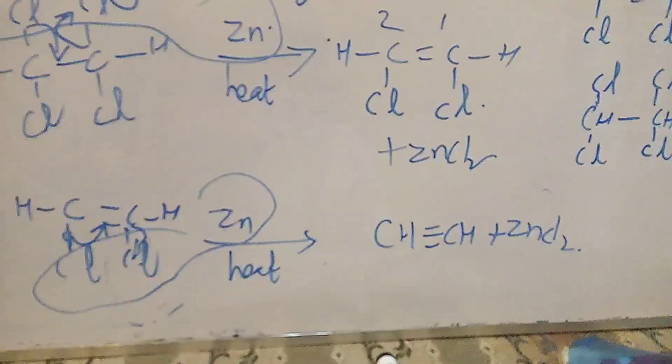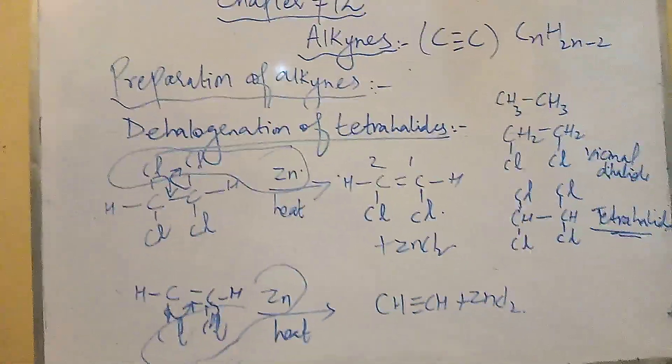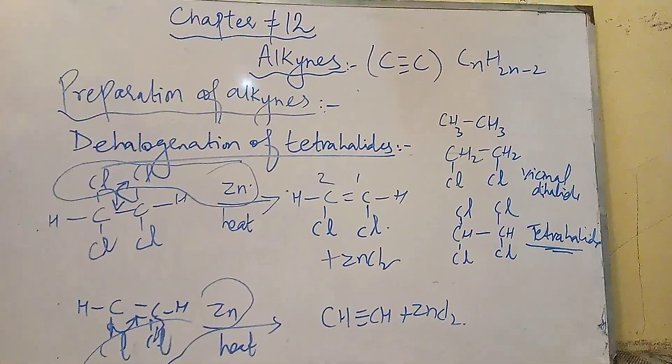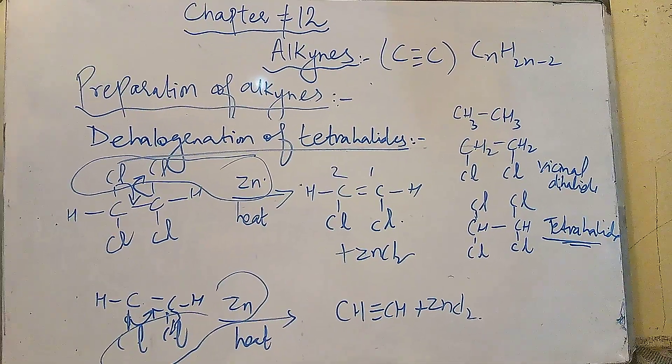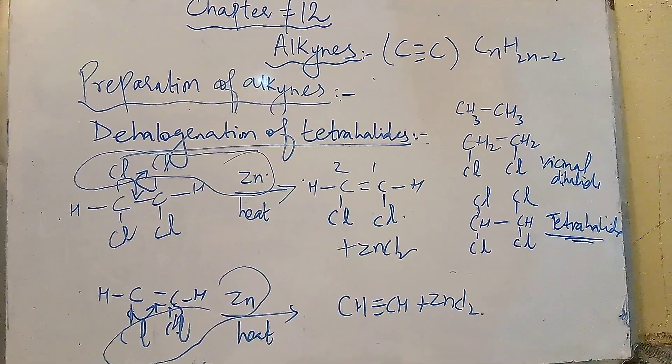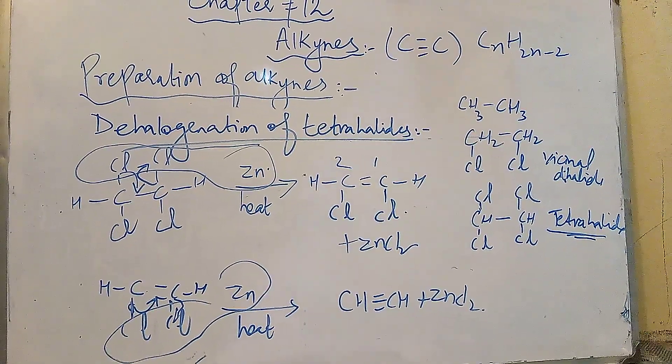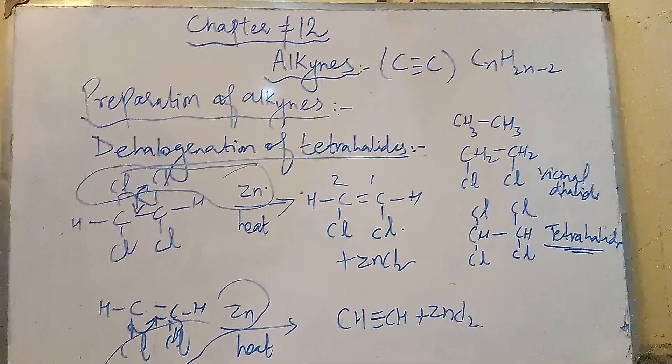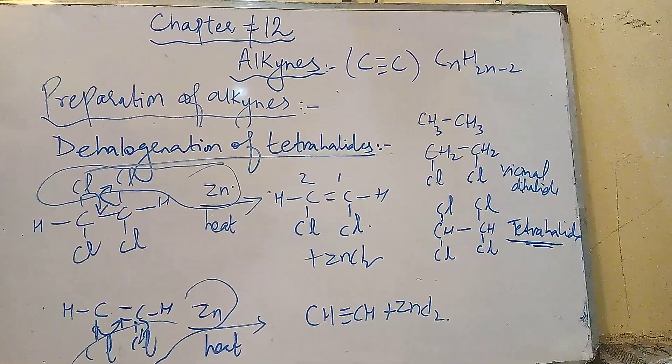So you will get alkyne. This is the second method for the preparation of alkyne, that is dehalogenation of tetrahalides. Tetrahalides on dehalogenation in two steps forms alkyne. Tetrahalides are those which have four halogen atoms on adjacent carbon atoms.